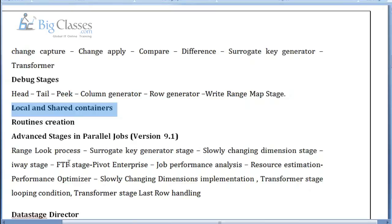We will also discuss routines. A routine is a Basic language code or C++ code. If you already have understanding of C++, some things we will write through C++ programs, which we call routines. There are two types of routines: server routines and parallel routines. In Data Stage there are different environments: server jobs, parallel jobs, maintenance jobs, and sequence jobs. When writing routines for parallel jobs, you use C++ language. We will discuss how to write C++ routines and cover advanced Data Stage 9.1 version stages completely.